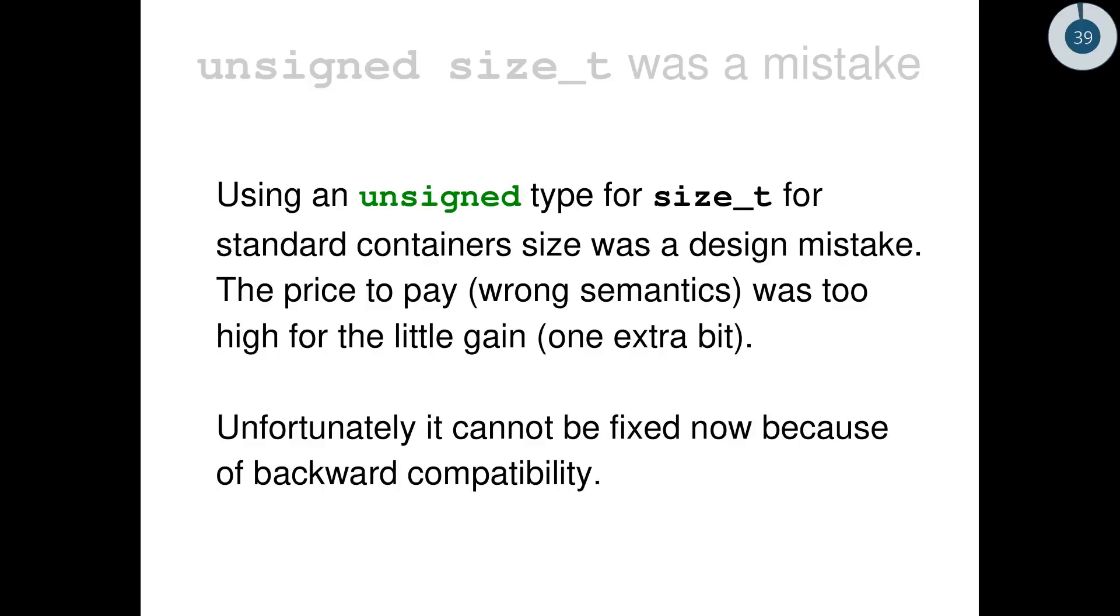Using an unsigned type for size_t for the standard containers was a design mistake. The price that was paid, that is wrong semantics, was too high for the little gain. It's one extra bit. And this is my opinion. Someone might think that back then was the correct choice. I don't think that even back then was the correct choice.